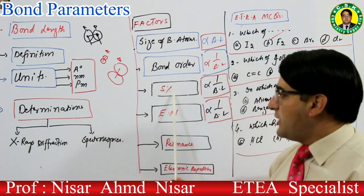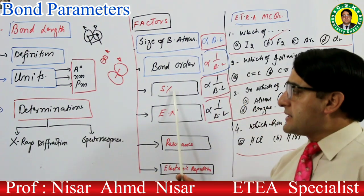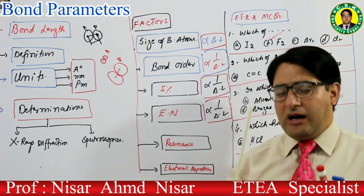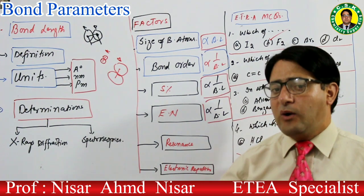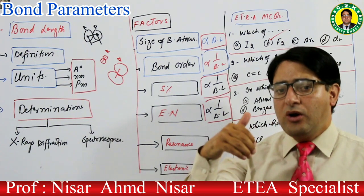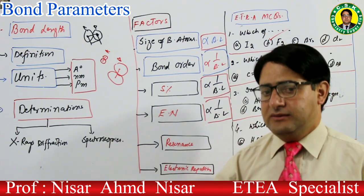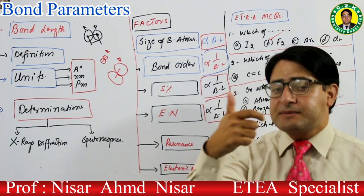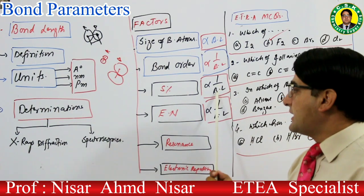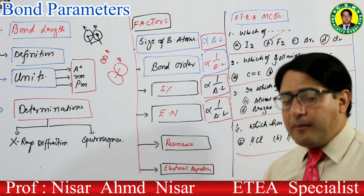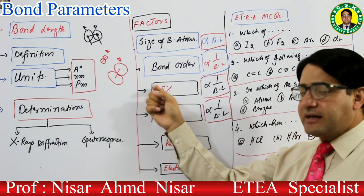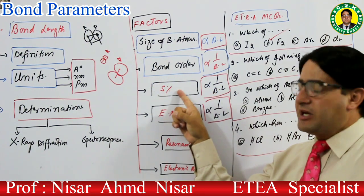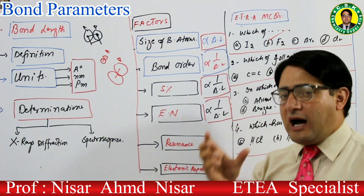Next factor ہے percent s character۔ کسی bond کے اندر اگر s character زیادہ ہوگا — یعنی bonding میں involve orbitals میں — تو bond length کیا ہوگی؟ Bond length کم ہوگی۔ Percent s character اور bond length میں inverse relation ہے۔